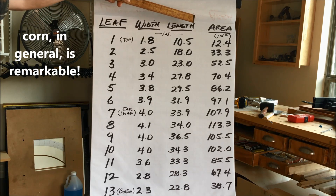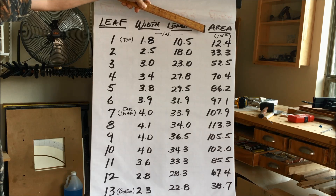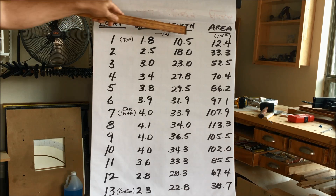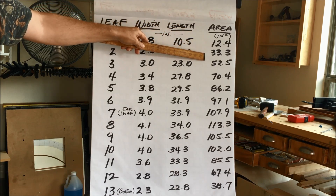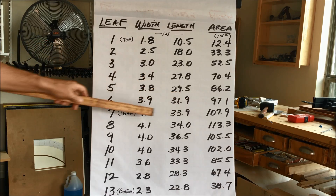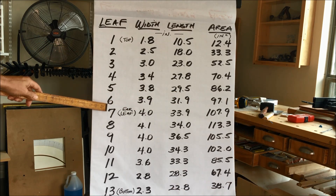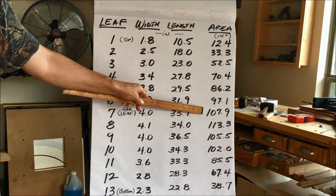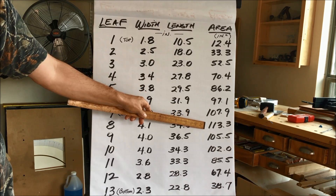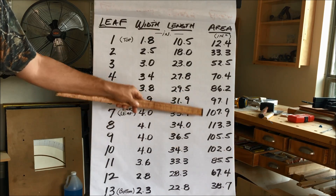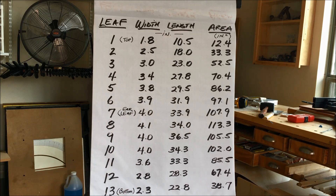With the planimeter, we measured the surface area of each leaf in square inches — started in square centimeters and converted. Your top leaf comes in at 12.4 square inches, and as you make your way down the canopy, you're at or between about 100 square inches right between leaf number six and seven. When I get to the ear leaf: 108 square inches. Look at the leaf below it at 113, then 105, 102. These four or five leaves right here represent practically 53% of all the surface area.